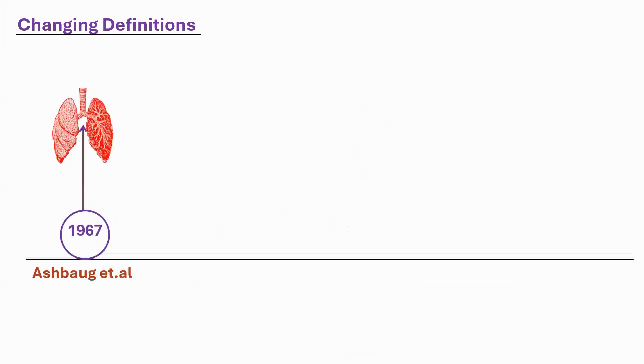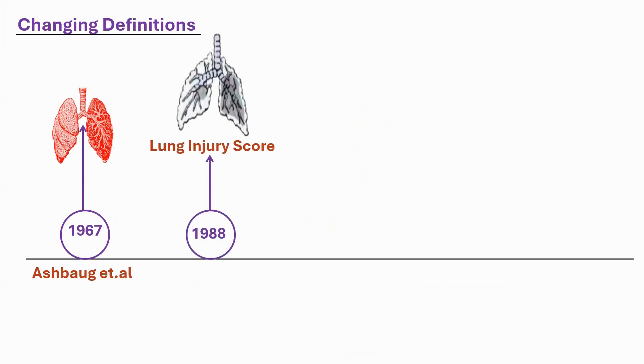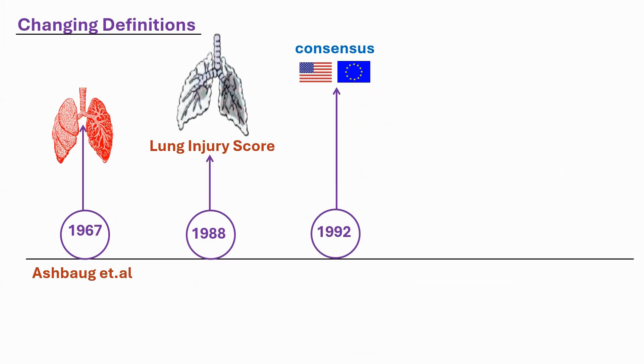Why do we need to look at ARDS as a whole? It has been 57 years and we have been grappling to define what ARDS is — the definition has been fluidic over these 57 years. The first definition came in 1967 by Ashbog et al. In 1988 they revisited this topic and came out with a lung injury score. In 1992 they again redefined it.